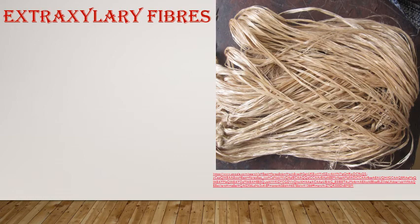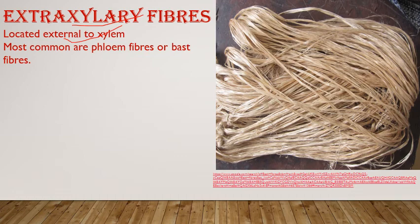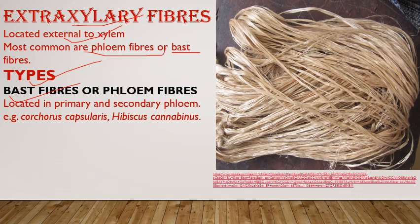Extra-xylary fibers are present external to xylem. The most commonly occurring are phloem fibers, also called bast fibers. They are present with primary or secondary phloem — for example in Corchorus capsularis (jute) and Cannabis.